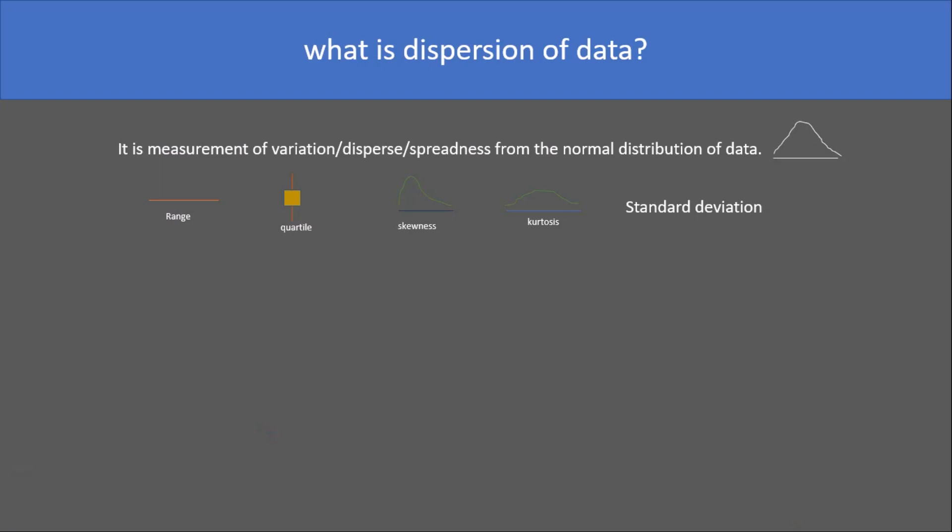There are lots of statistical terms you see to measure the variation in data, like range, quartile, squareness, kurtosis, and standard deviation. Ever think why it is important to know the variation in data?